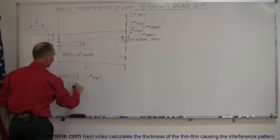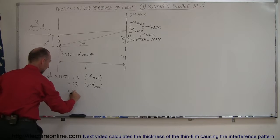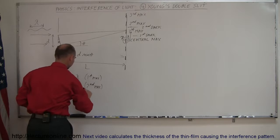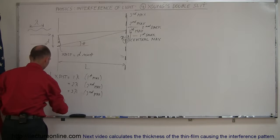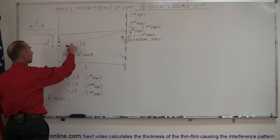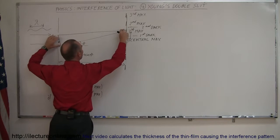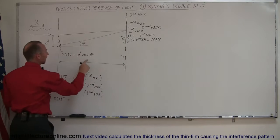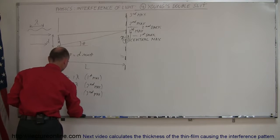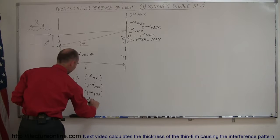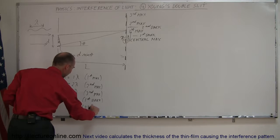If the extra distance traveled equals two lambda, we get the second maximum; three lambda gives the third maximum. To reach higher fringes, the angle theta must become greater, which increases the extra distance. If the extra distance is half a lambda, we get the first dark spot. One and a half lambda gives the second dark spot, and so forth. You can see the pattern here.